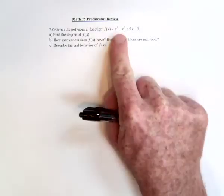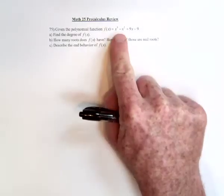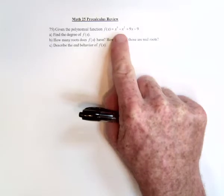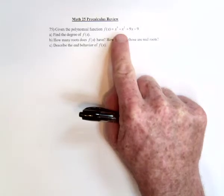So we've got this polynomial here, f of x is equal to x cubed minus x squared plus 9x minus 9.